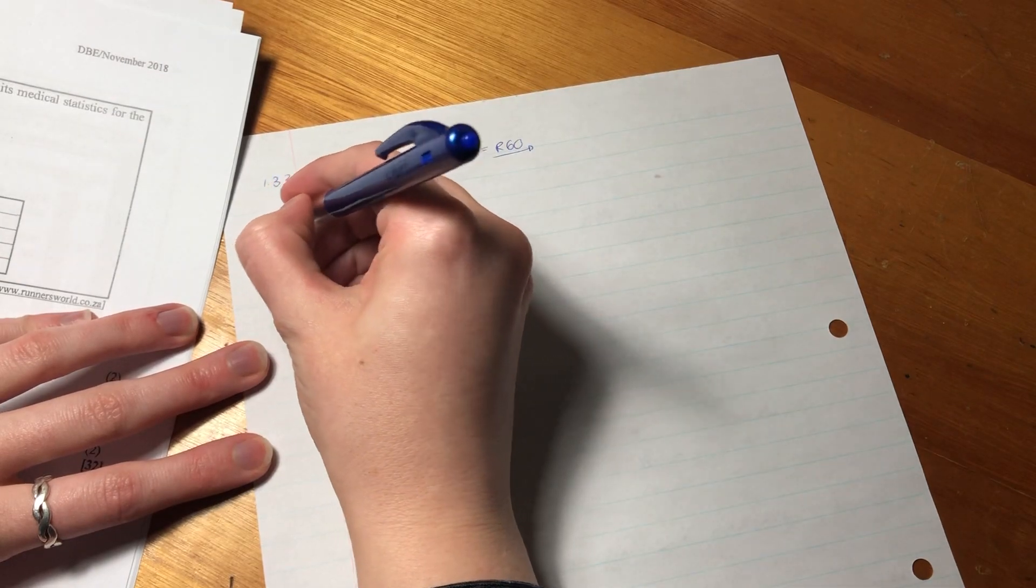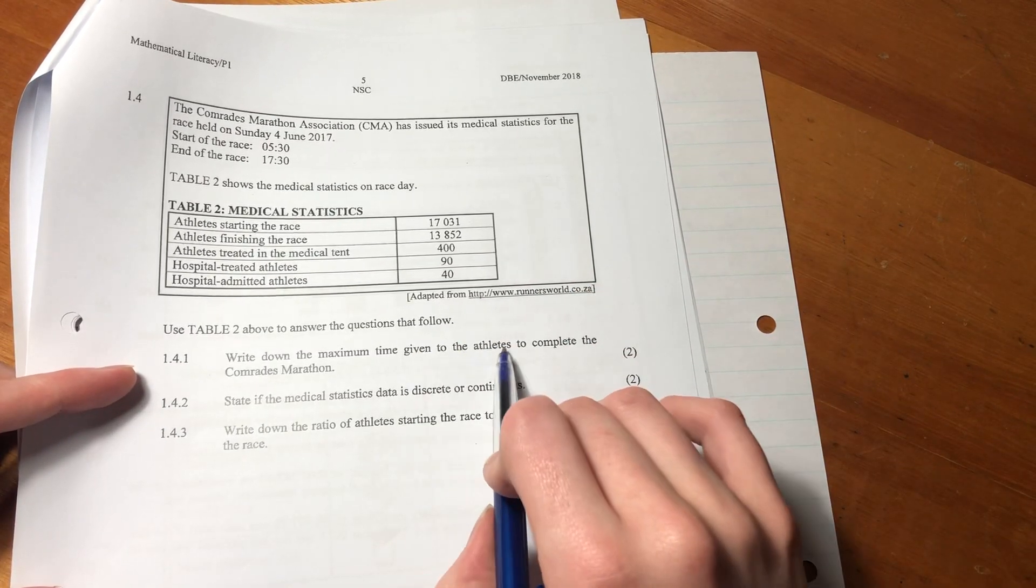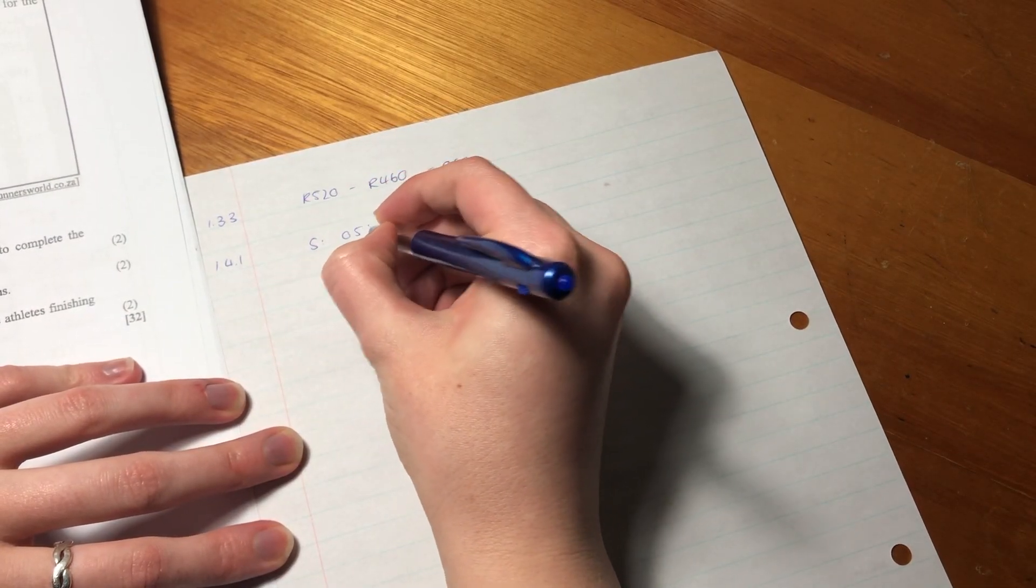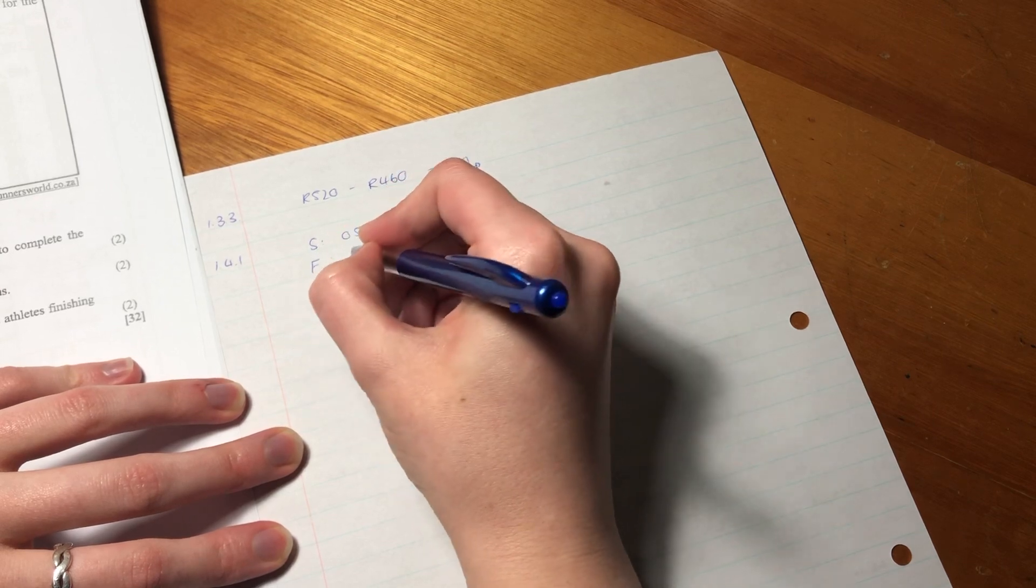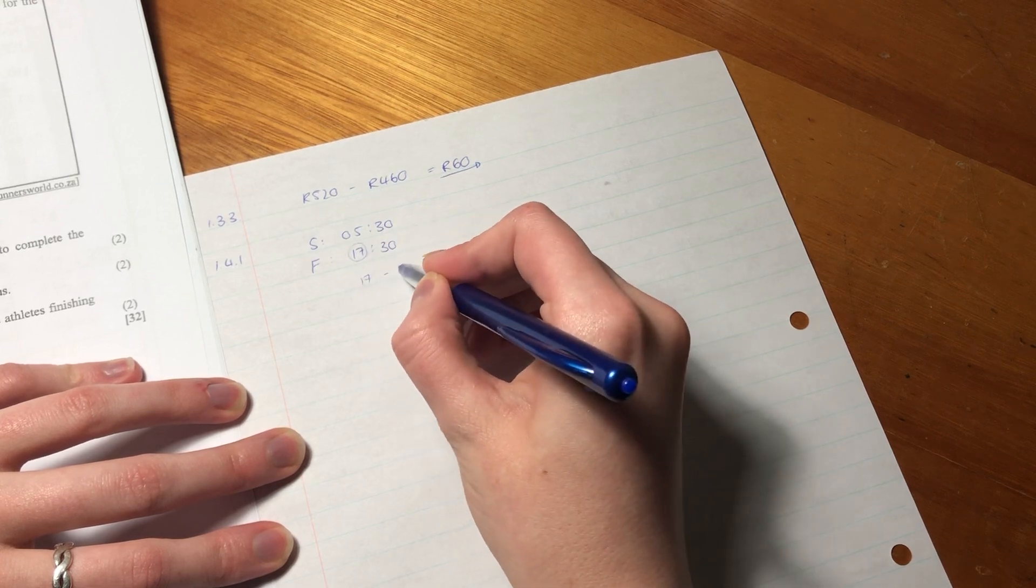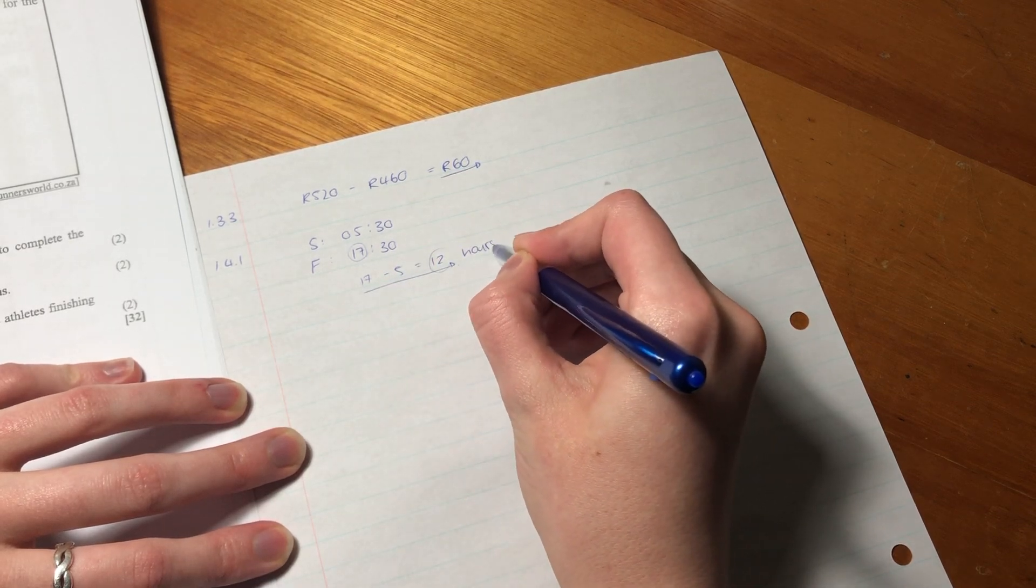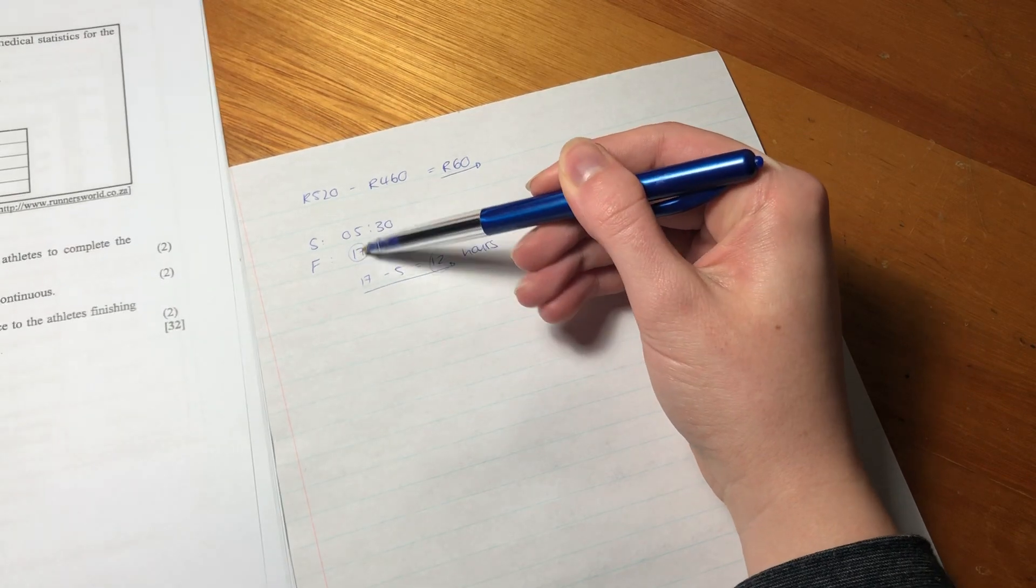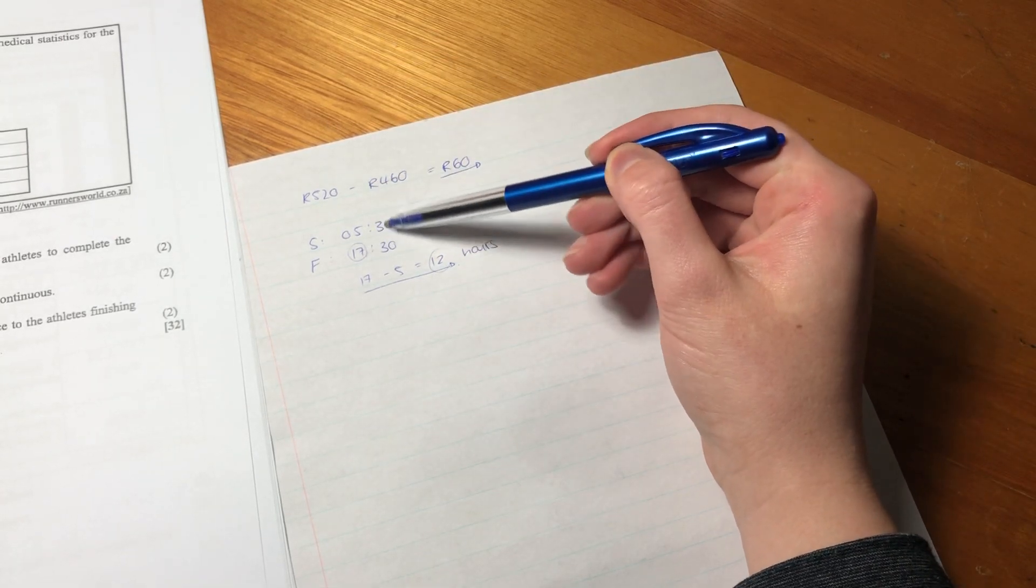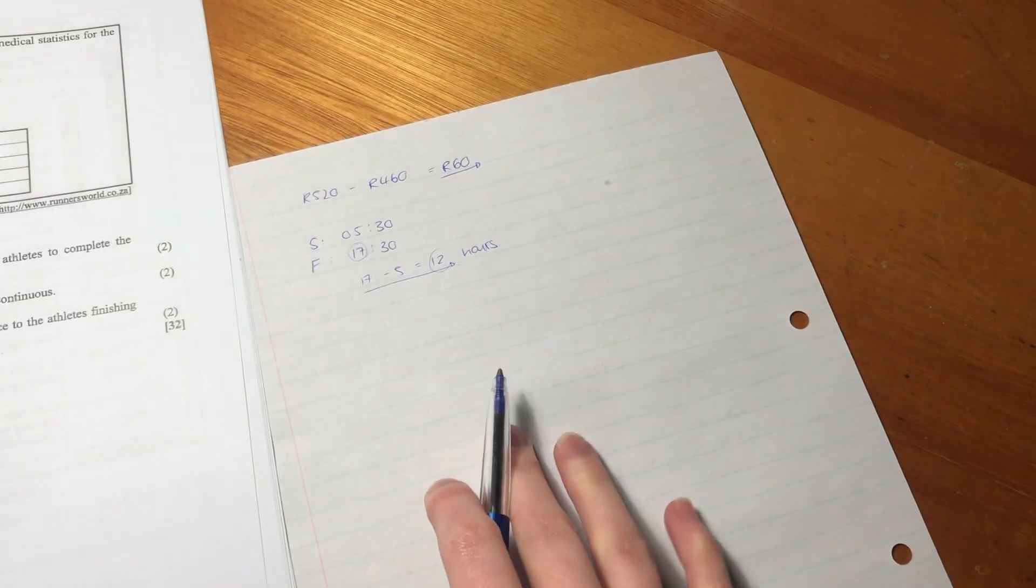So 1.4.1. Write down, so we're using the table, write down the maximum time given to athletes to complete the Comrades. So we know that they can start at 5:30 in the morning, and they can finish at 5:30 in the afternoon. So if you say 17 minus 5, it gives us 12. So that is our answer, 12 hours. We know that between 5 in the morning and 5 in the afternoon is always 12, right? It's the same between 6 in the morning and 6 at night. There's always 12 hours. Here, I ignored the 30s because they were the same, so they cancel each other out. So exactly 12 hours between there.